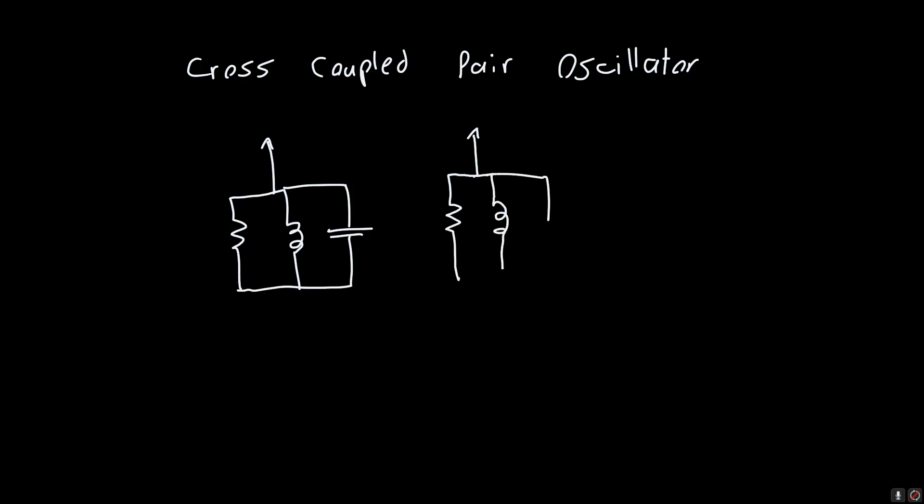So in the last video we talked about the cross-coupled pair oscillator, and we said that if you have something that looks like this. So we've got a resistor, an inductor, and a capacitor, and then we've got that on two sides. So resistor, inductor, and capacitor.